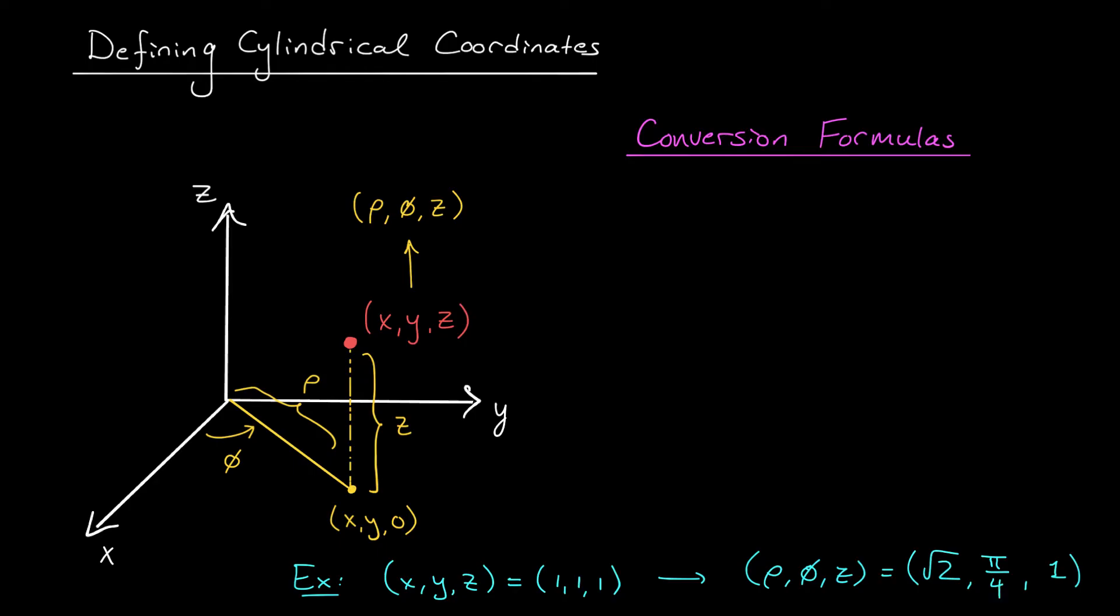In fact, since cylindrical and polar coordinates are so closely linked, we have many of the same conversion formulas from Cartesian coordinates. We can write x = rho cos phi, y = rho sin phi, and z = z. z doesn't change.